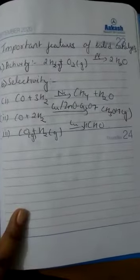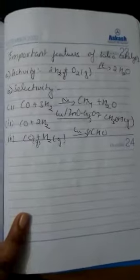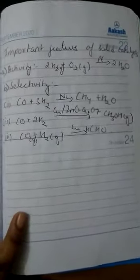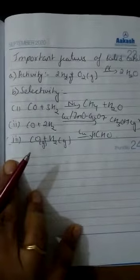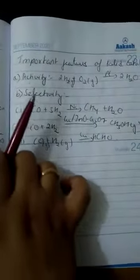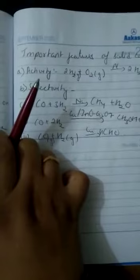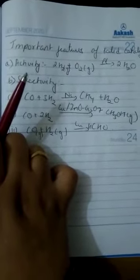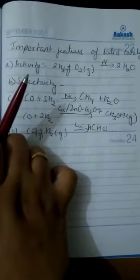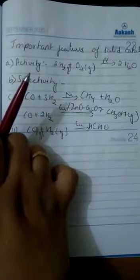The next topic is important features of solid catalysis. First is activity. How does the activity of solid catalysis take place? The activity of a catalyst depends on the strength of chemisorption to a large extent. The reactants must get adsorbed reasonably or strongly onto the catalyst to become active.